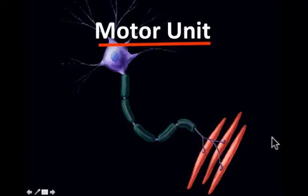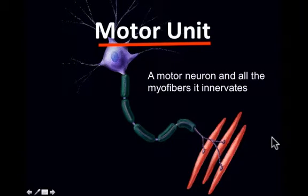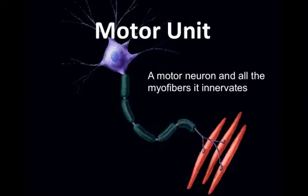A new term: the motor unit. A motor unit is simply a motor neuron and all the myofibers it innervates. A single muscle such as the biceps is made up of several hundred motor units — the average number for a typical bicep is around 750 to 800 motor units.